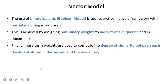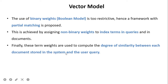The use of binary weights in the boolean model is too restrictive, so a framework with partial matching is proposed. This is achieved by assigning non-binary weights to index terms in queries and in documents. These term weights are then used to compute the degree of similarity between each document stored in the system and the user query.